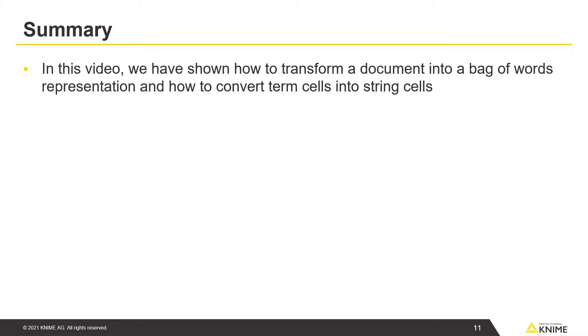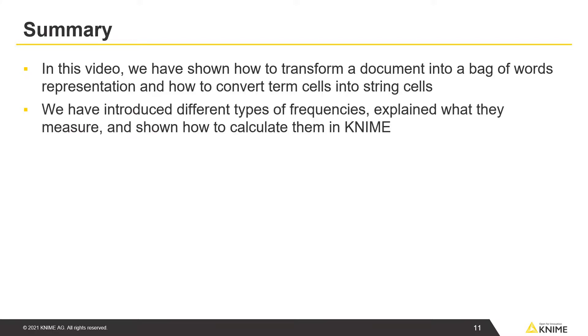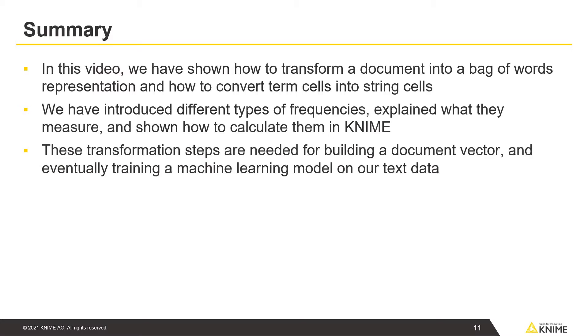In this video, we've shown how to transform a document into a bag-of-words representation and how to convert term cells into string cells. We've also introduced different types of frequencies, explained what they measure, and shown how to calculate them in KNIME. These transformation steps are needed for building a document vector and eventually training a machine learning model on our text data.